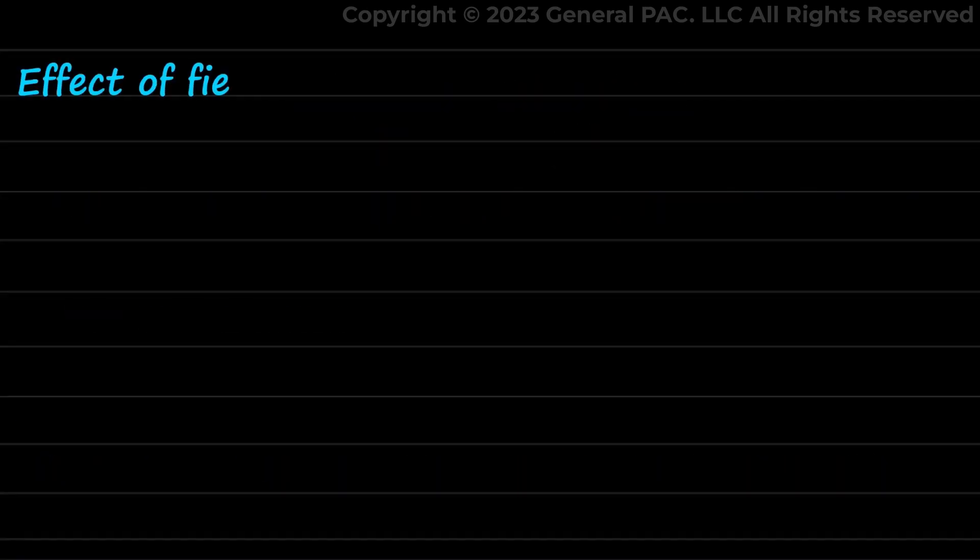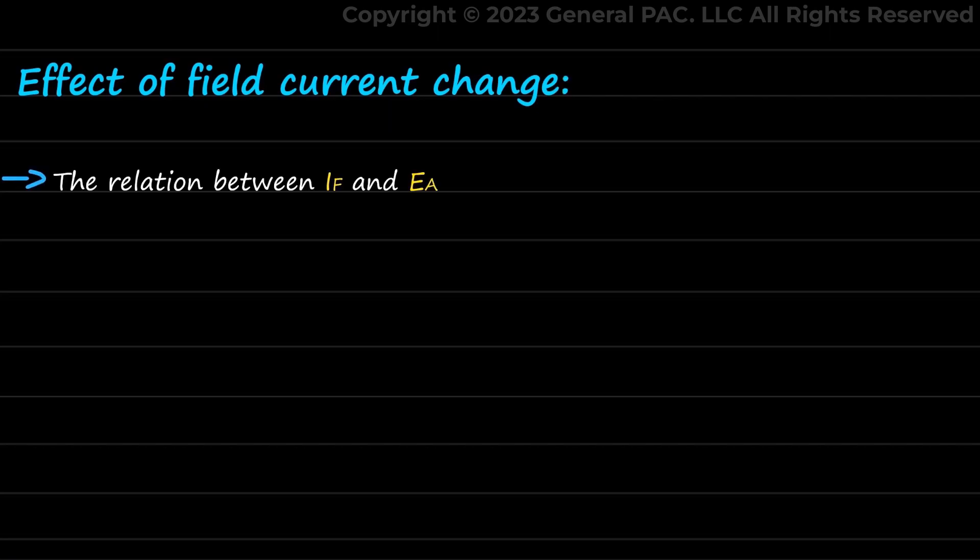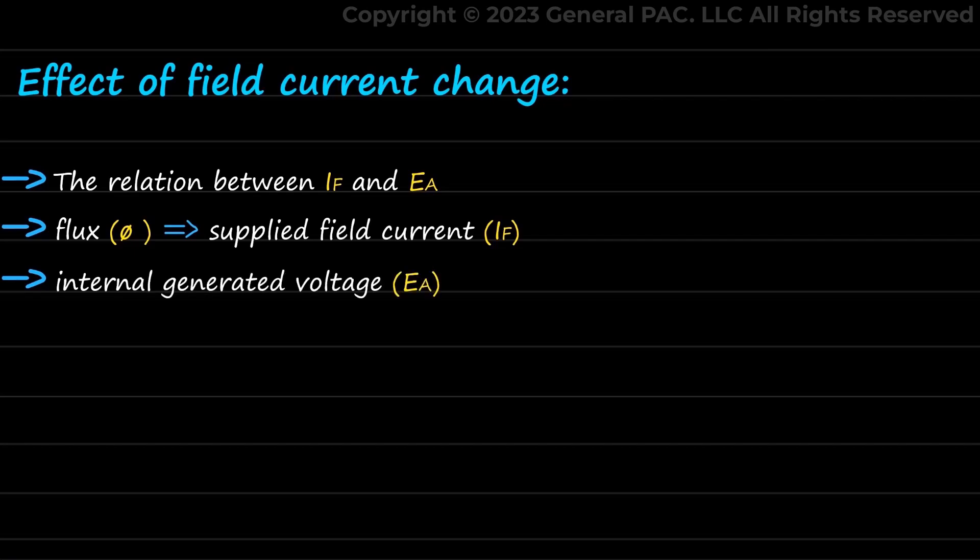Effect of Field Current Change. Firstly, we figure out the relation between IF and Ea. We know that flux phi of the rotor depends directly on supplied field current IF, while internal generated voltage Ea equals k times phi times omega. Here, k is the machine constant that depends on the number of turns of machine, while omega is rotational speed of the motor. These two quantities are constant.